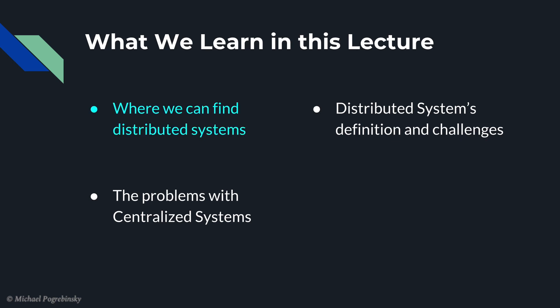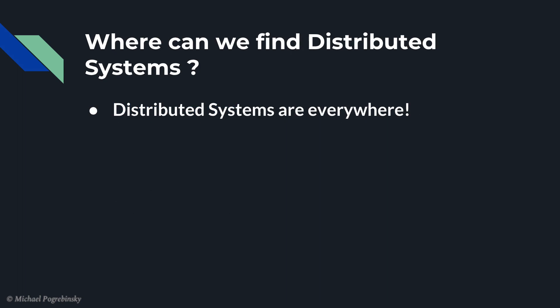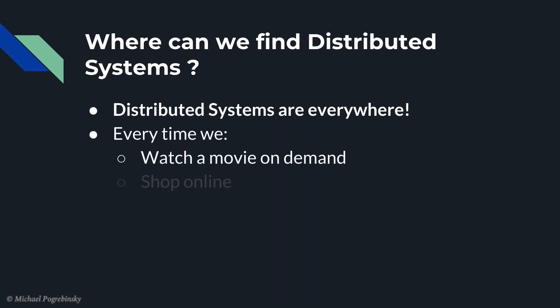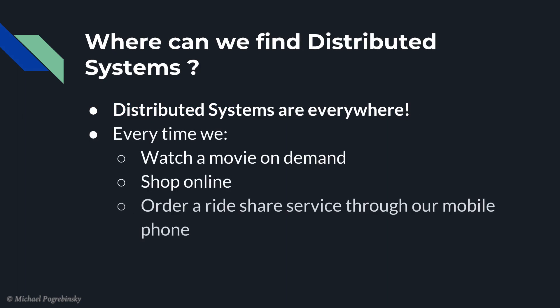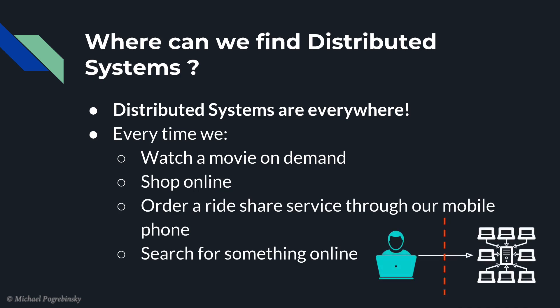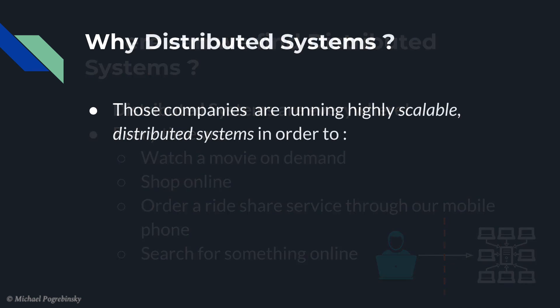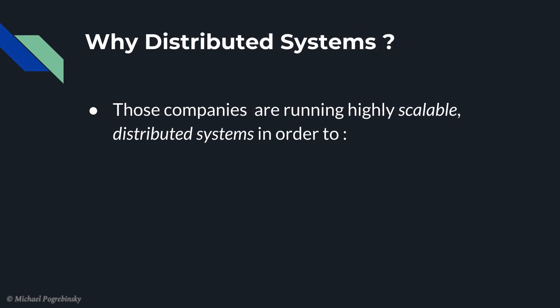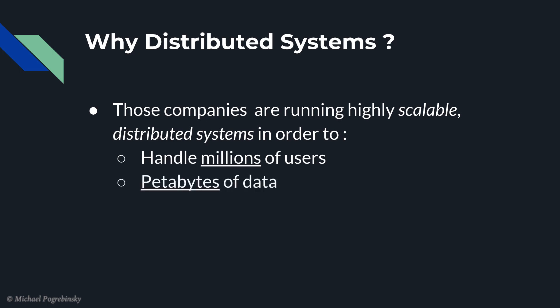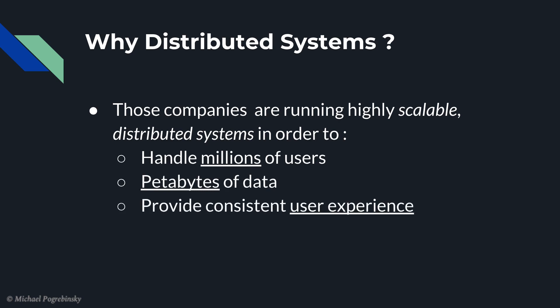So where can we find distributed systems? Distributed systems are everywhere. Every time we watch a movie on demand, shop online, order a rideshare service through our phone, or search something on the internet, we in fact communicate with a distributed system hidden from us by a webpage or an app. All those companies that provide us with those services are running highly scalable, massively distributed systems all around the globe to handle millions of users and petabytes of data every single day and give us, the users, a consistent and seamless user experience.